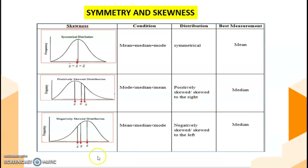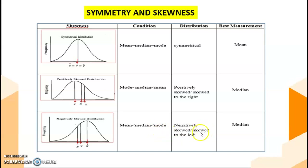The third one: if we have mean is less than median, less than mode, the distribution is negatively skewed or skewed to the left. The best measurement is median.